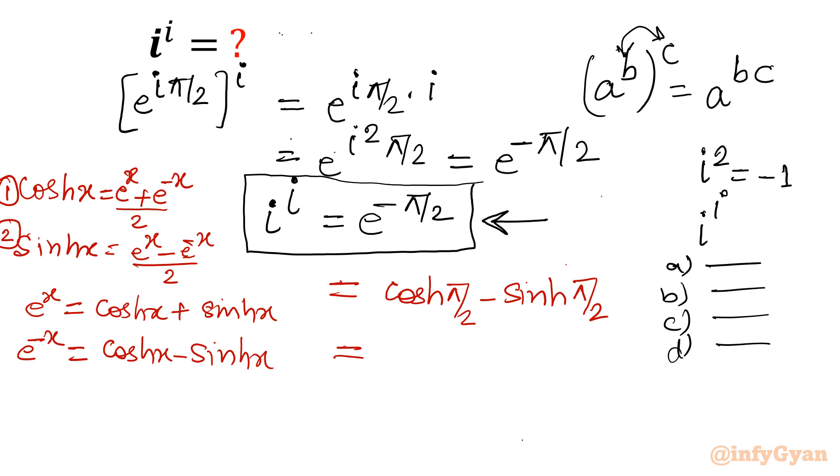If you will find out cosh(π/2) value, then that value will be equal to 2.5091. And sinh(π/2) is 2.3012. Once you subtract, your answer will come out 0.2079.